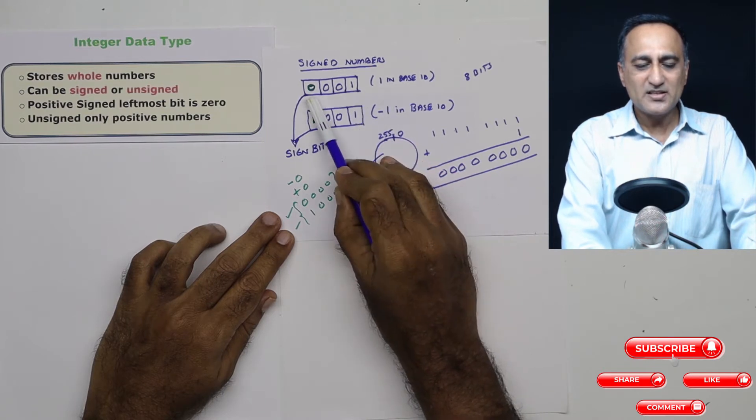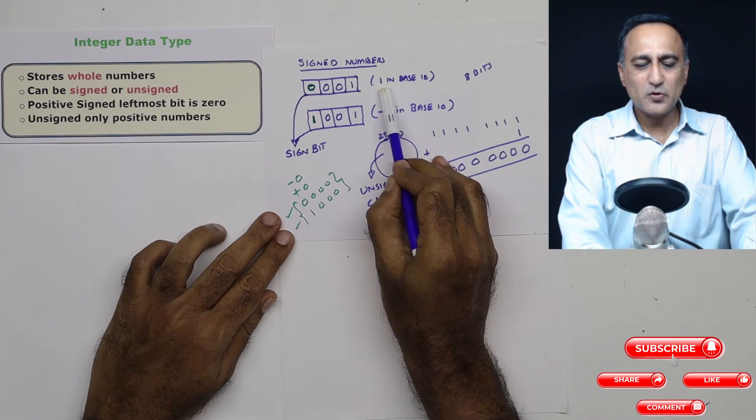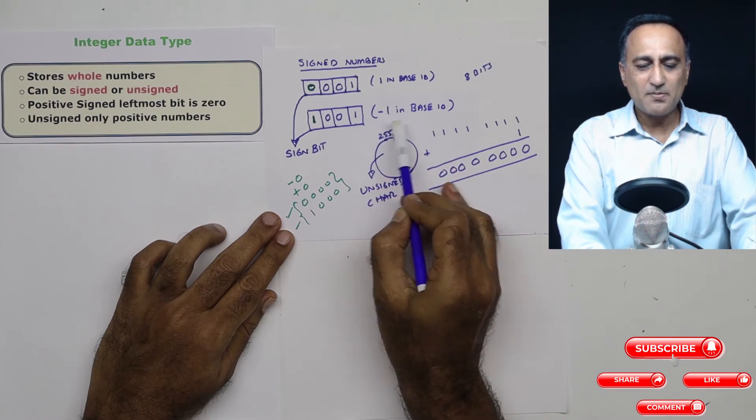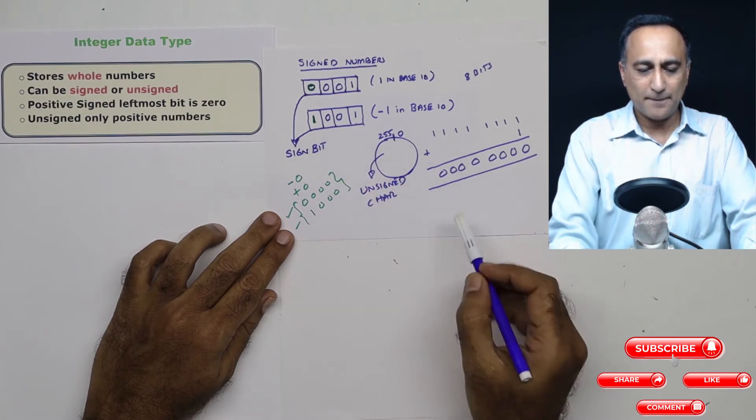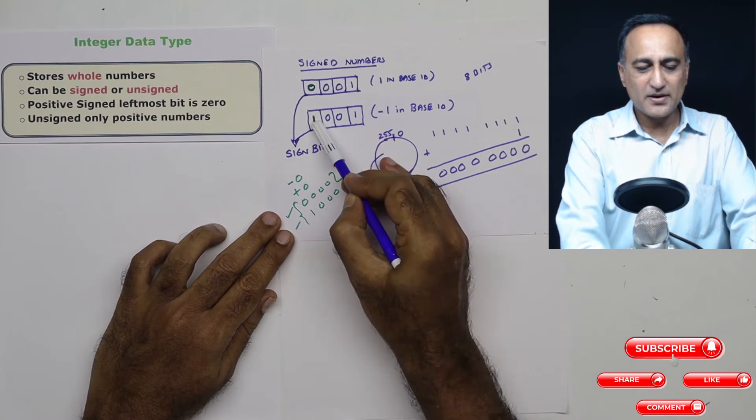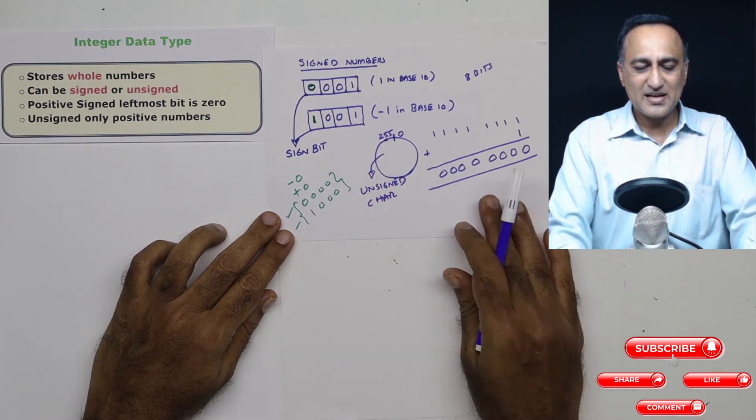So this is plus one and the zero indicates that this is positive. Now if I have to represent minus one in base 10, all that I do is I make this bit as one indicating that this one is minus one. So this leftmost bit is also known as the sign bit.